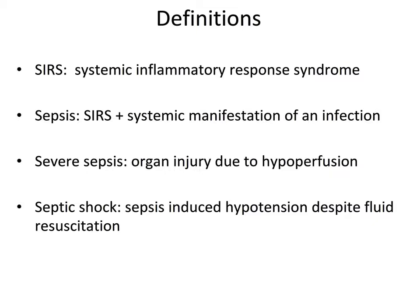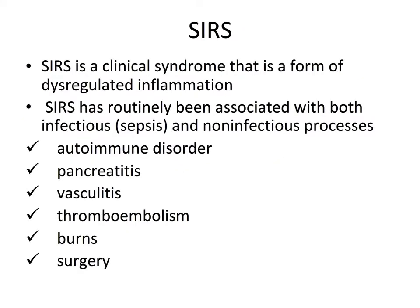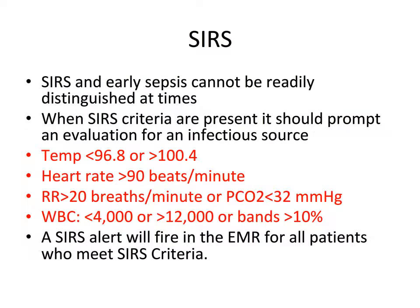SIRS can be best described as a clinical manifestation of dysregulated inflammation and has been associated with both infectious and non-infectious processes, such as autoimmune disorder, pancreatitis, and thromboembolic disease. SIRS and early sepsis cannot be readily distinguished at times. When SIRS criteria are present, you should always prompt an evaluation to eliminate an infectious source. SIRS criteria are based on temperature — less than 96.8°F or greater than 100.4°F — heart rate greater than 90 beats per minute, respiratory rate greater than 20, and white blood cell count less than 4,000, greater than 12,000, or a normal count with 10% bands. When this criteria is met, a SIRS alert will fire in your electronic medical record to alert you of the possibility of a septic patient.